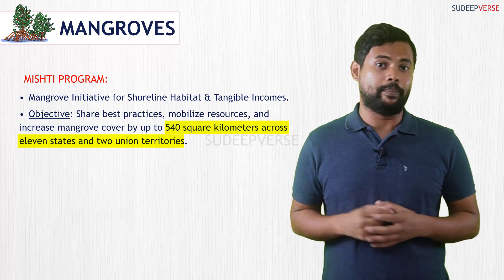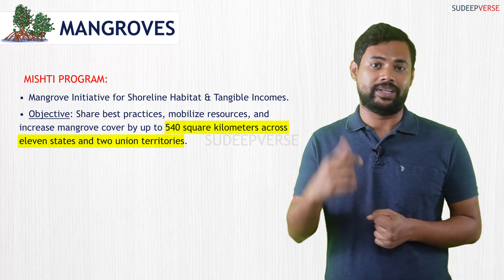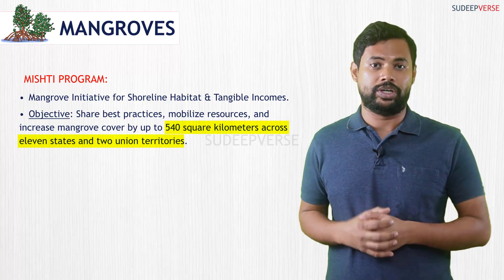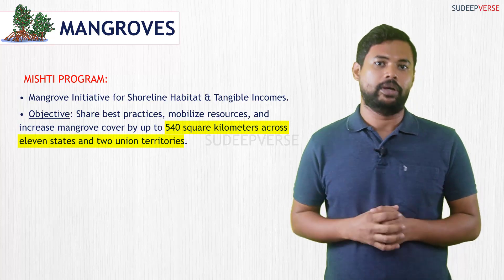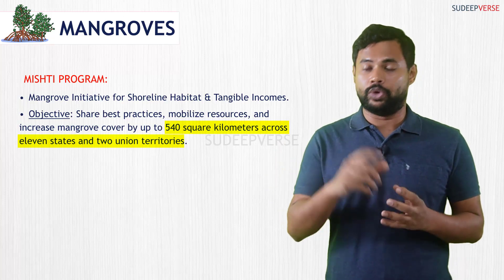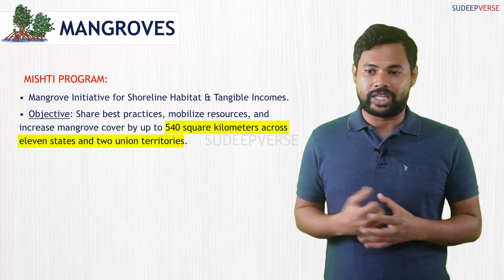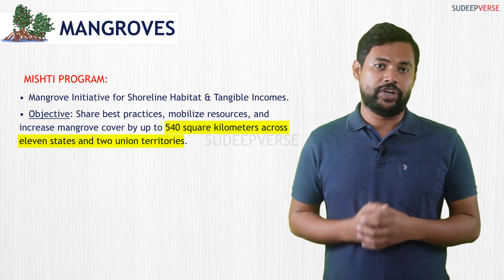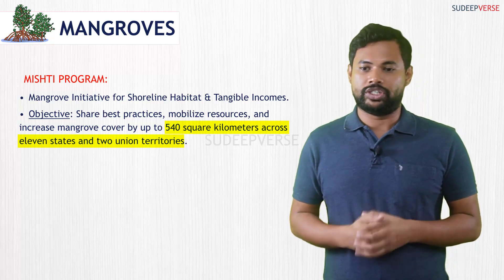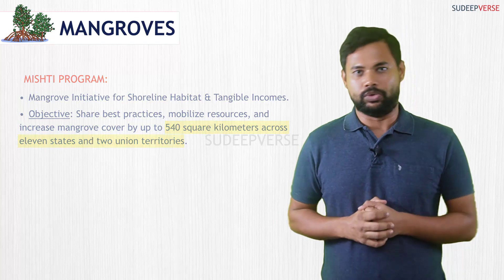The Mangrove Alliance for Climate, announced at COP 27 in 2022 in Egypt, also unites countries including India to accelerate and scale up conservation, restoration, and plantation efforts for mangroves.